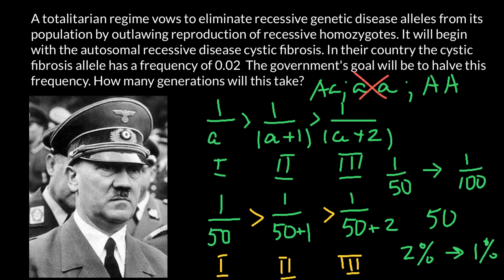We need 50 generations just to go from 2% recessive alleles in the population to 1%. Can you imagine? 50 generations is about 1,000 years. If each person must grow up to at least age 20 before having children, each generation takes roughly 20 years. Multiply 50 by 20 and you get 1,000 years — just to decrease this disease-causing recessive allele from 2% to 1%. As you can see, the ideas of national genetic purification would never work as intended. Thank you for your attention. Please subscribe, leave a thumbs up, write your comments and questions, and share this video with your classmates. Goodbye.